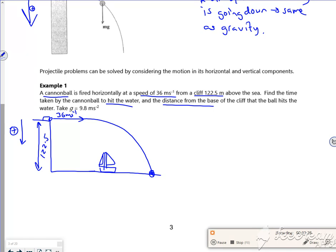So if I look vertically, then the distance it travels is 122.5 meters in the direction of travel. And the direction of travel is going down. My initial velocity vertically is nothing. My final velocity, not fussed about. My acceleration is gravity, which is 9.8, and it's going in the direction of travel. And the time is unknown.